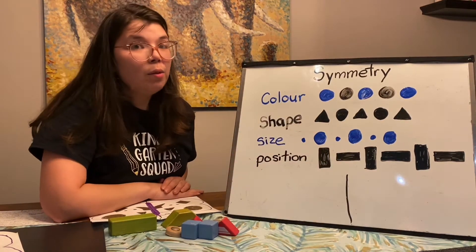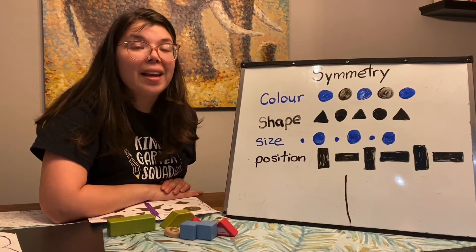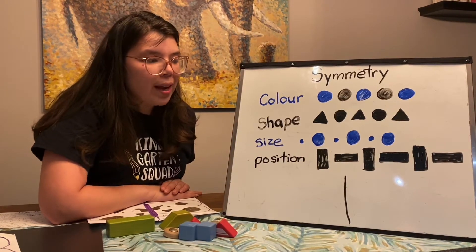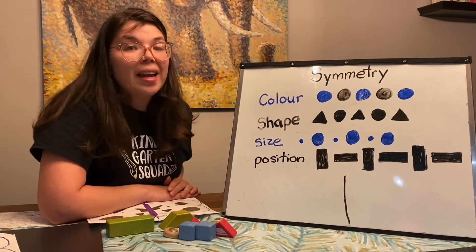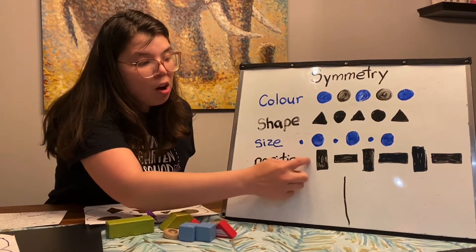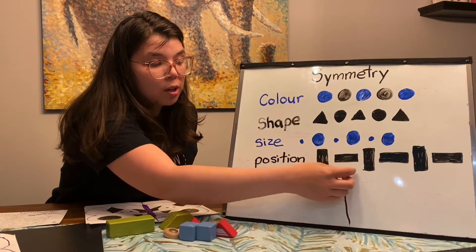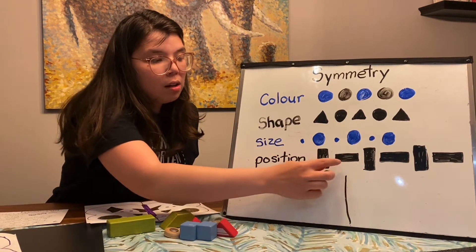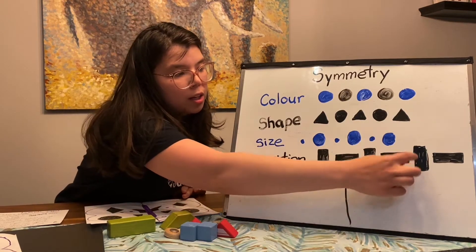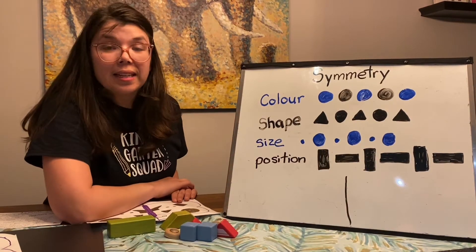One thing we don't talk a lot about in kindergarten but it's really important for grade one is position — that means the way that the shape or whatever you're doing is facing. So this is a tall rectangle and it's the same rectangle just turned on its side: tall, long, tall, long, tall, long. And again that's an AB pattern.